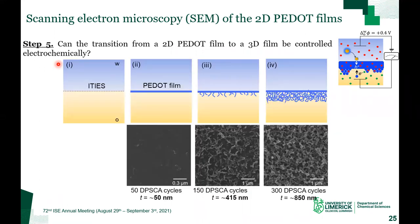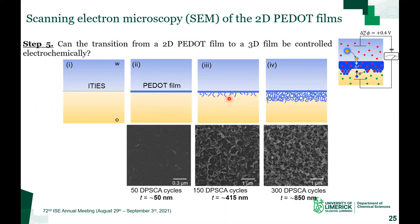For step five of the mechanism, an interesting question is: can the transition from a 2D PEDOT film to a 3D film be controlled electrochemically? The evolution of the morphology of the organic-facing side of the thin film can be controlled with DPSCA cycling. Initially after 50 cycles, we have a thickness of around 50 nanometers and the thin film grows 2D parallel to the liquid-liquid interface in a highly compact structure on both sides. With continued cycling, we get a secondary 3D growth which begins to extend into the organic phase, and this controllable secondary growth process leads to the formation of a very porous 3D structure with a thickness of up to 850 nanometers after prolonged interfacial synthesis.